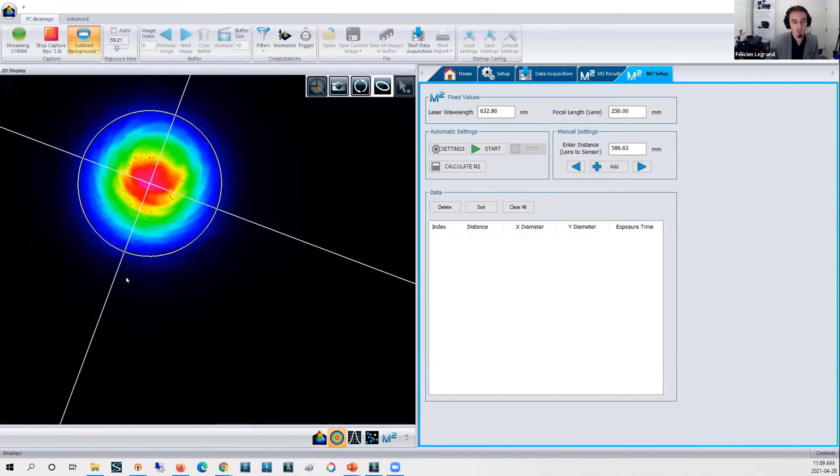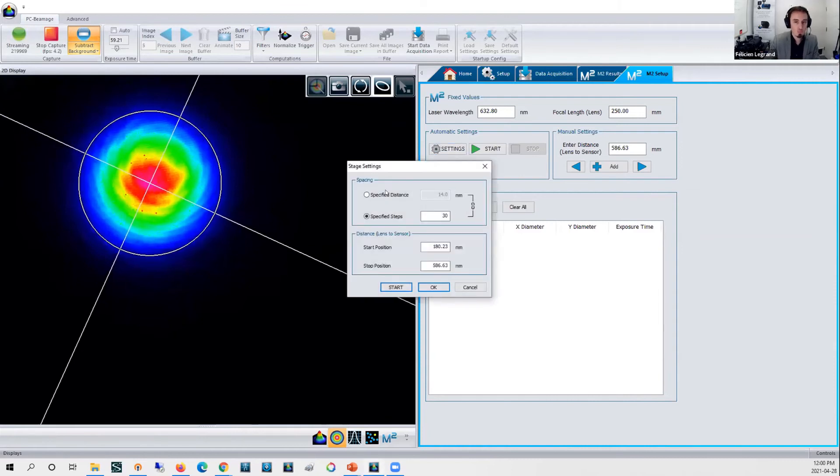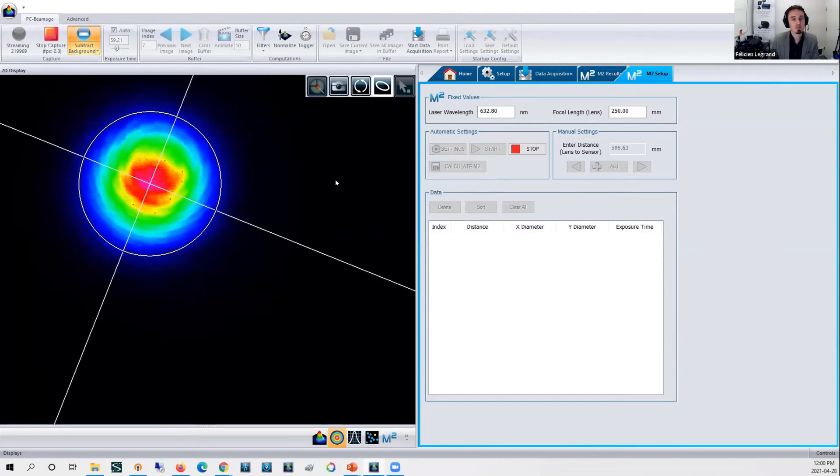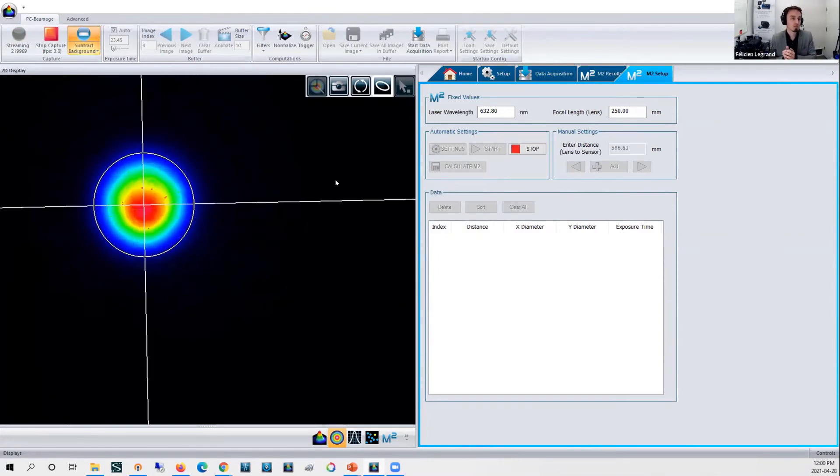Now let's do a rapid scan. What I want to know first is where is my beam waist, the minimum size of my laser beam. I'm going to tell the software give me 10 points of measurement and scan the entire range and just tell me where my beam is. Press start.